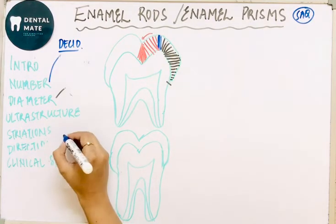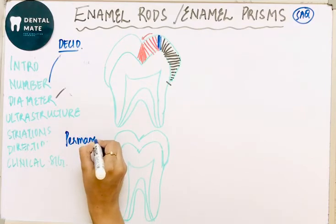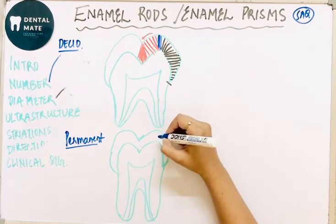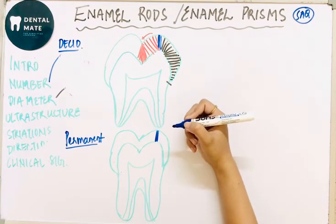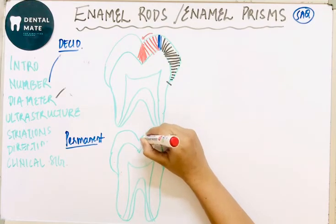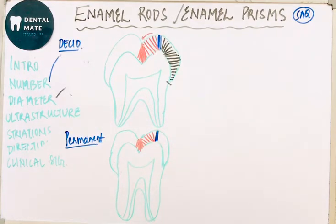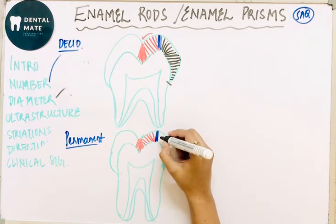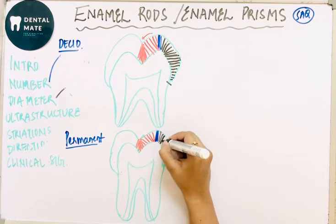In the permanent tooth, the arrangement at the cusp tip is similarly vertical. Near the pit and fissure region, the rods are obliquely oriented, converging at the pit and fissure. Toward the central part and cervix, the rods become decreasingly oblique, similar to the deciduous pattern.